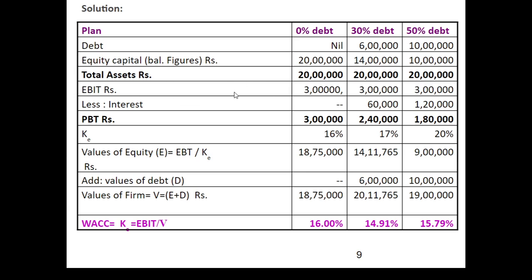In Case 1, there is no interest as there is no debt. In Case 2, 30% debt of 6 lakhs at 10% interest gives 60,000. In Case 3, 50% debt of 10 lakhs at 12% interest gives 1,20,000. Profit before tax (earnings available to shareholders): in Case 1 it is 3 lakhs; in Case 2, 3 lakhs minus 60,000 equals 2 lakh 40,000; in Case 3, 3 lakhs minus 1,20,000 interest leaves 1 lakh 80,000.